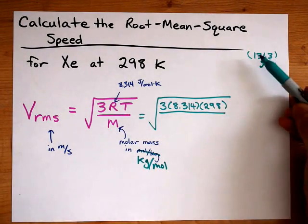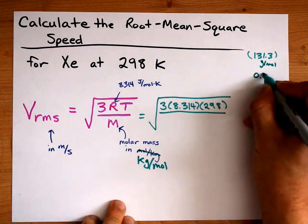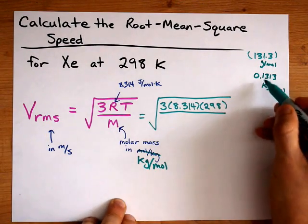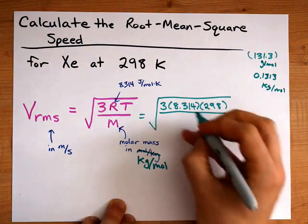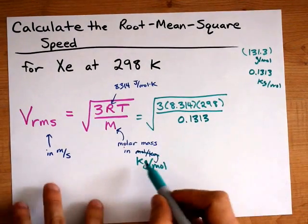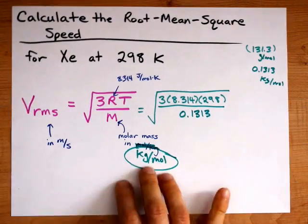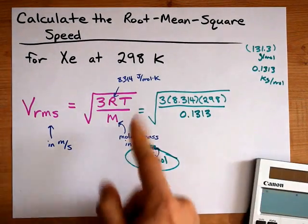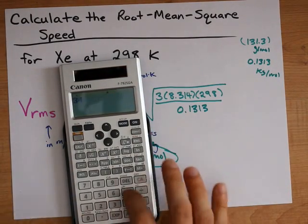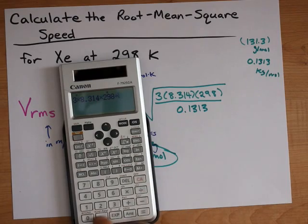So if one mole of xenon weighs 131.3 grams, that's equivalent to 0.1313 kilograms. I got that by dividing by a thousand. So, the molar mass that I put in here is 0.1313. Again, that is in kilograms per mole, not moles per kilogram. That would have been wrong. The kilograms still cancel out the same way I told you that they did, and we have 3 times 8.314 times 298 divided by 0.1313.